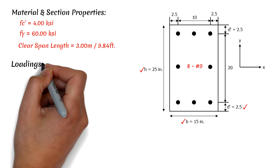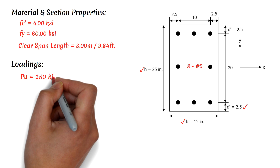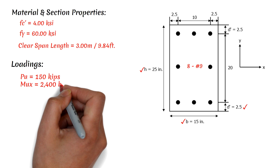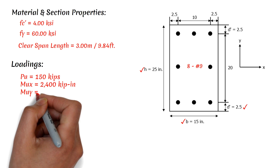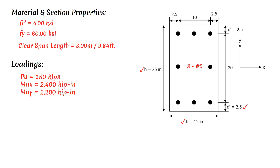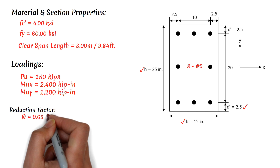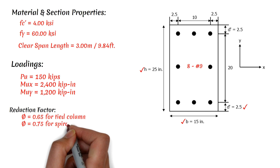For the loadings, we have the ultimate axial load PU equals 150 kilopounds, the ultimate moment along the X axis MUX equals 2,400 kilopound-inch, and the ultimate moment along the Y axis MUY equals 1,200 kilopound-inch. We will use a reduction factor phi equals 0.65 for a tied column and 0.75 for a spiral column.